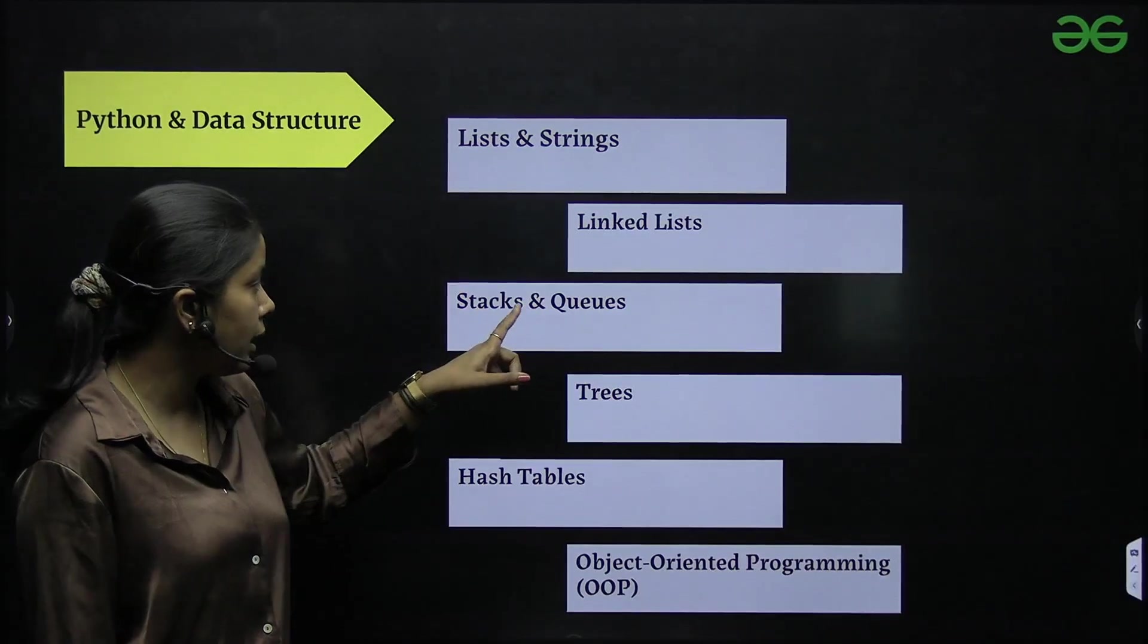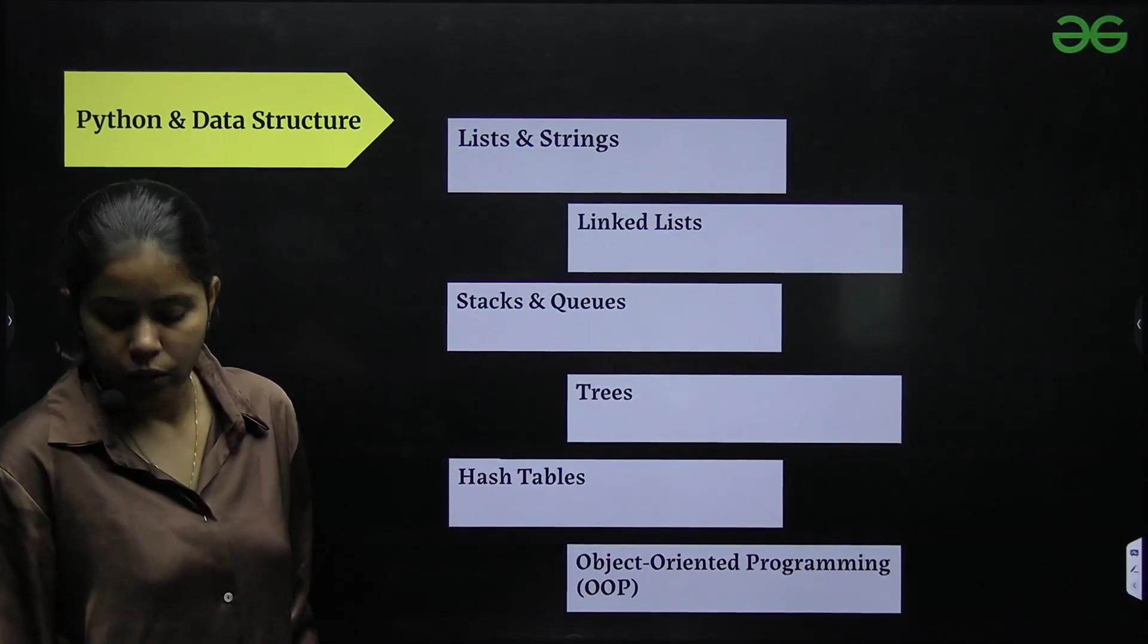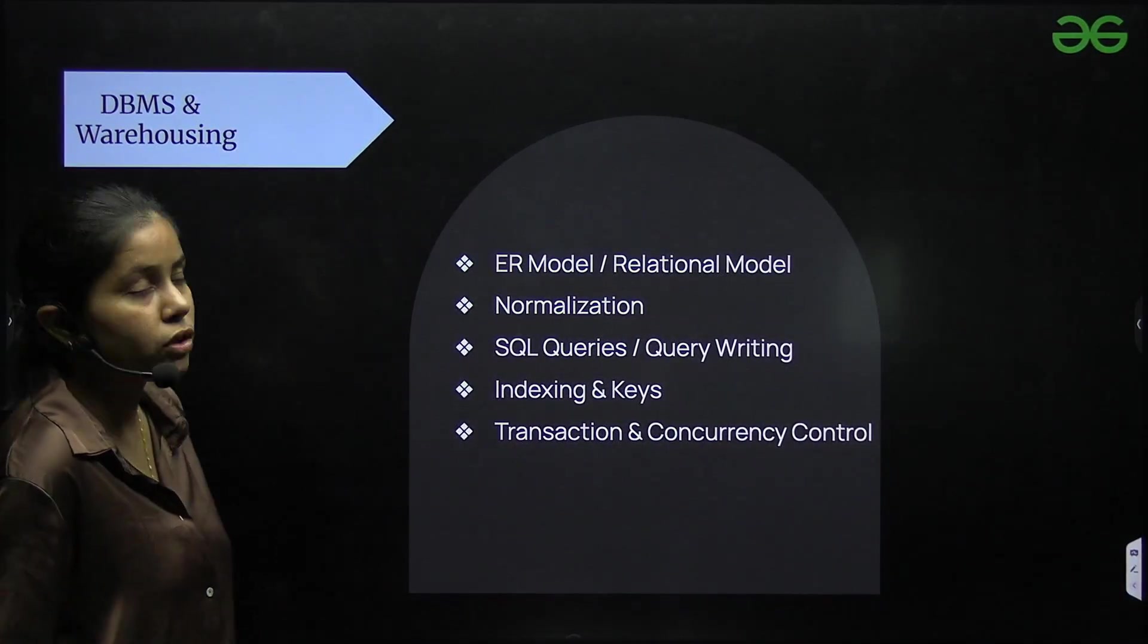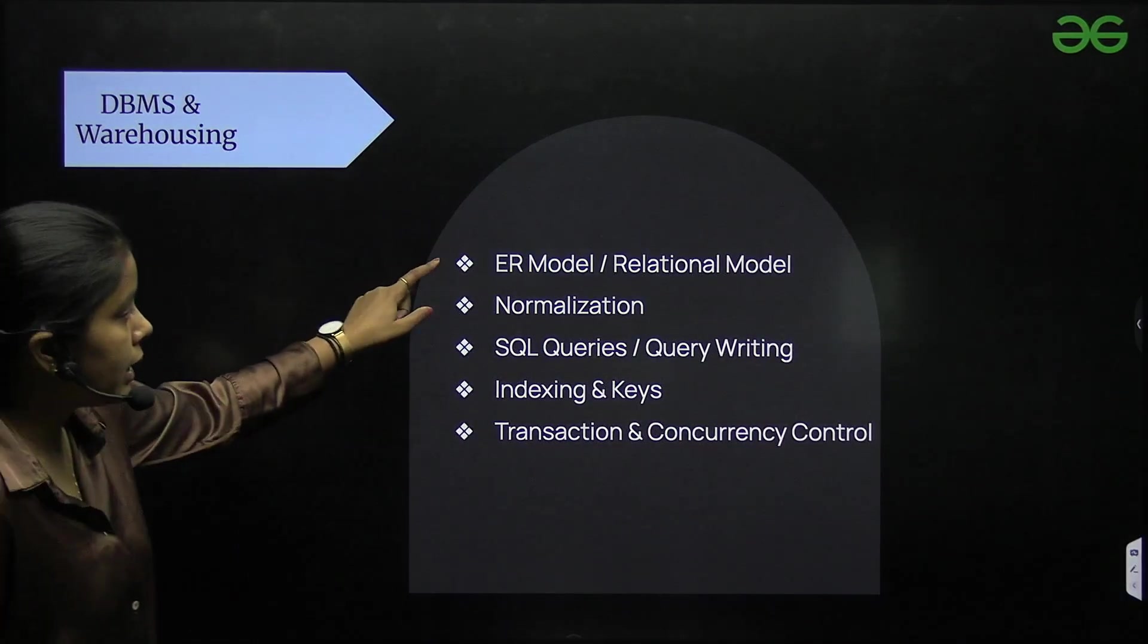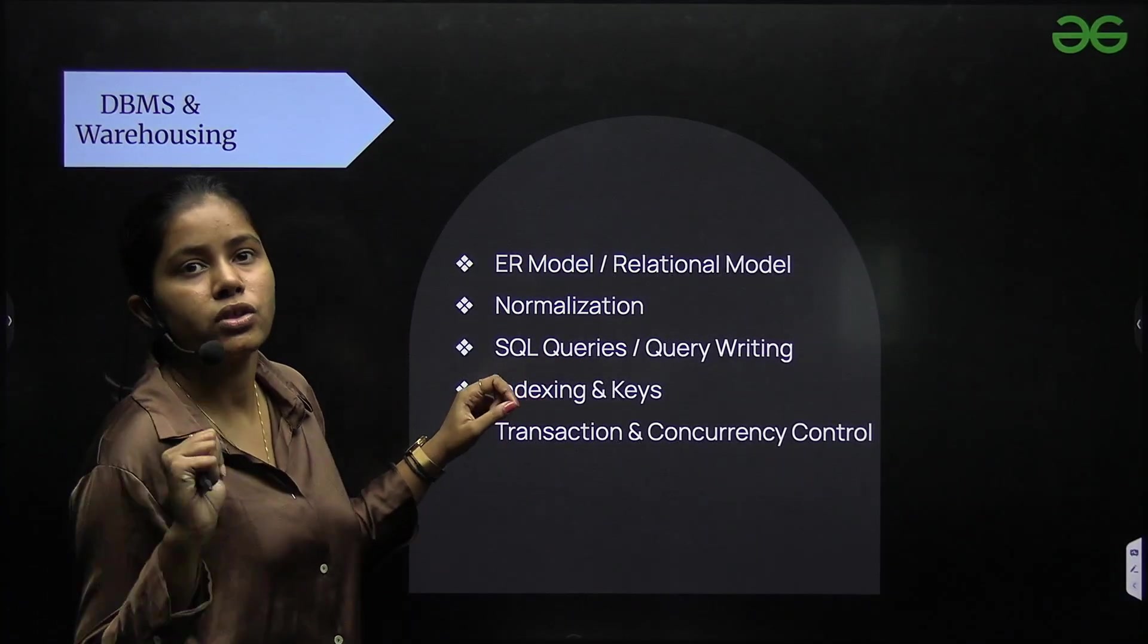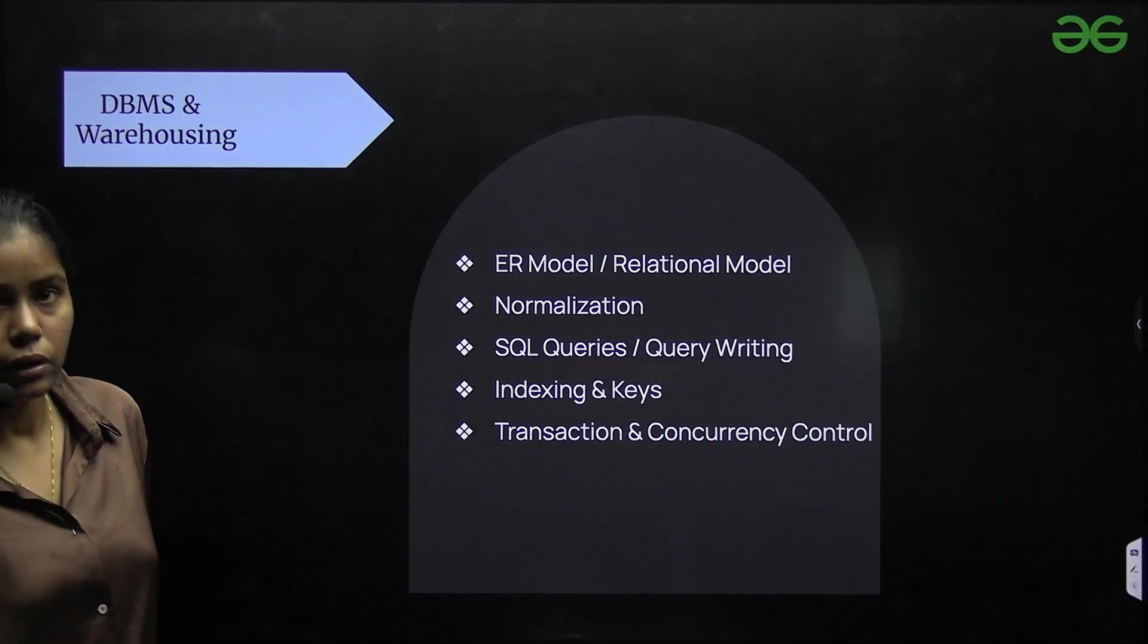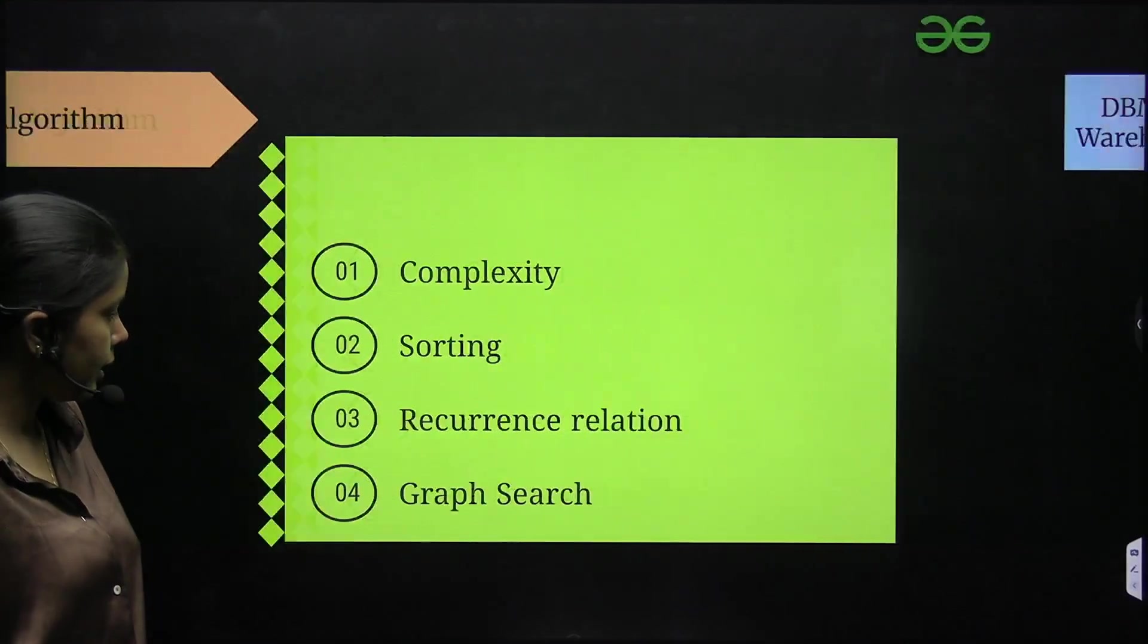And also we have Python and data structures. Important topics are: list, string, linked list, stacks, queues, trees, hash table, object oriented programming. There were 21 marks of DSA. So make sure you cover each and everything. DBMS and warehousing: ER model, relational model, normalization, SQL queries, how to write a query. There is always a question based on query, indexing and keys, transaction and concurrency control. So just go through all these topics.